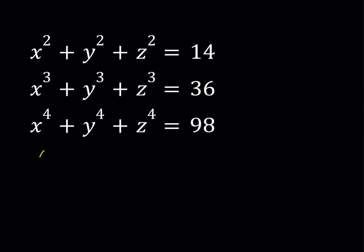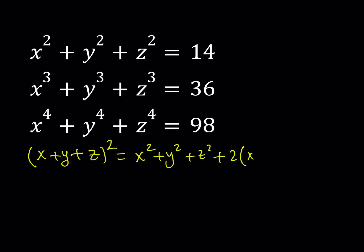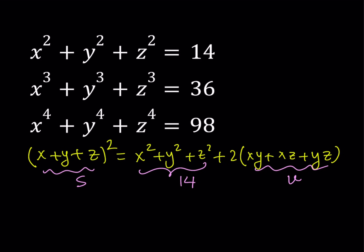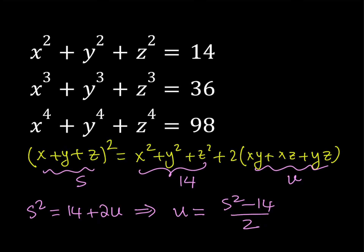Let's start. I'd like to take x plus y plus z and square both sides. That gives me x squared plus y squared plus z squared plus two times the quantity xy plus xz plus yz. When you look at this, you get the sum and the two-way products — this should remind you of Vieta's formulas. Let's call x plus y plus z as S for sum, and xy plus xz plus yz as U. Since x squared plus y squared plus z squared equals 14, we get S squared equals 14 plus 2U, so U equals (S squared minus 14) over 2.